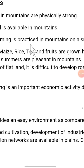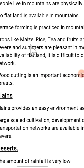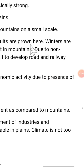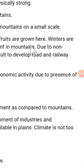Terrace farming is practiced in mountains on a small scale. It is a form of cultivation in mountains but its style is different — in the form of terrace farming. Terrace is formed by cutting the mountains and making a straight area of field, which is on a very small scale where cultivation takes place. Specific crops like maize, rice, tea, and fruits are grown here. You will find many tea gardens on the mountains.